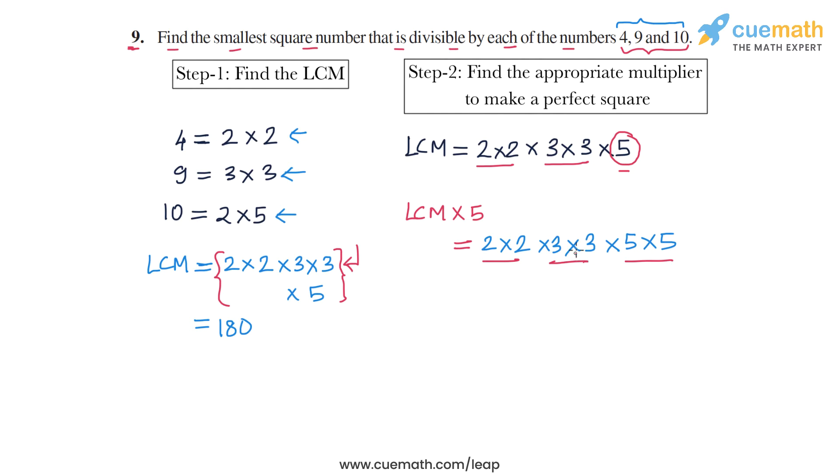And because it is a multiple of the LCM, it is also a multiple of all the three numbers 4, 9, and 10. So this is the number we want, the smallest number which is a multiple of all three numbers 4, 9, and 10 and which is also a perfect square.